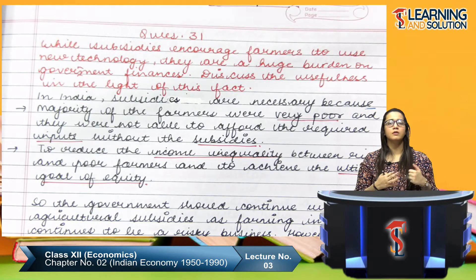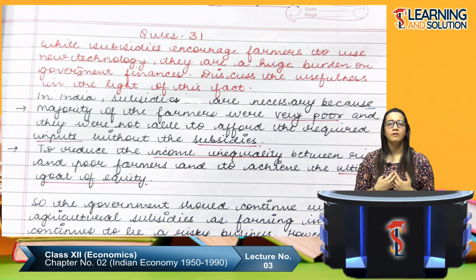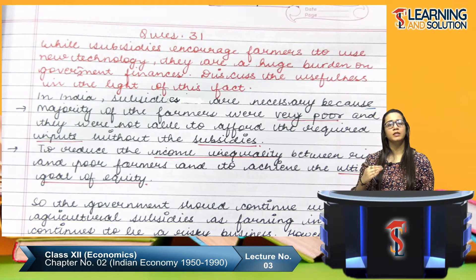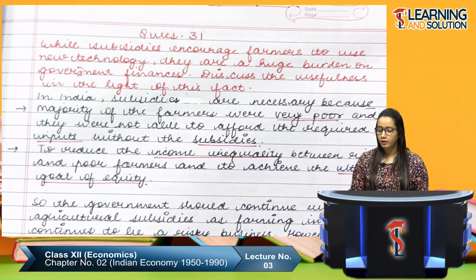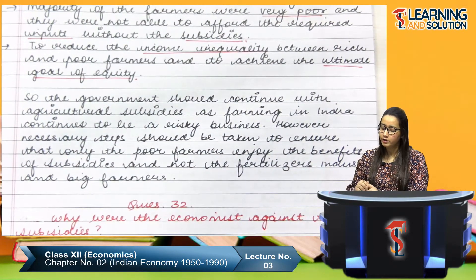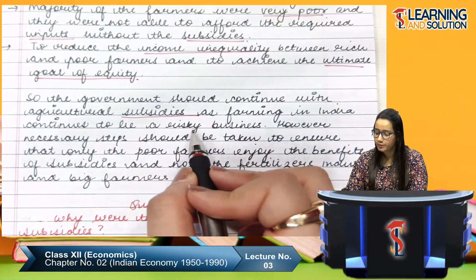Subsidies were basically meant to reduce income inequality between the rich and the poor and to achieve the ultimate goal of equity. The government should continue with agricultural subsidies as farming in India continues to be a risky business, because farming technology hadn't reached many people and farming was dependent on weather conditions.